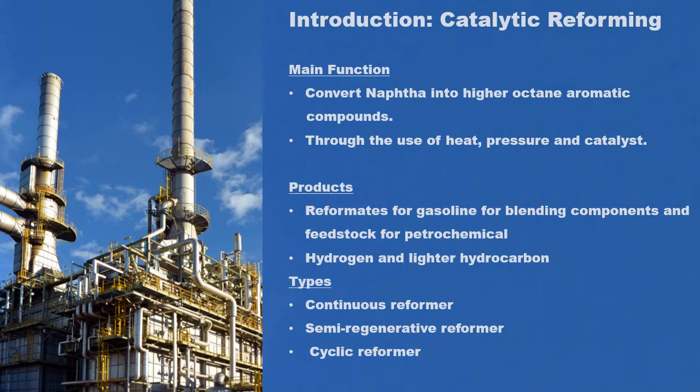The secondary products produced are hydrogen and lighter hydrocarbons. There are three types of catalytic reforming configurations, which are the continuous reformer, semi-regenerative reformer, and cyclic reformer.